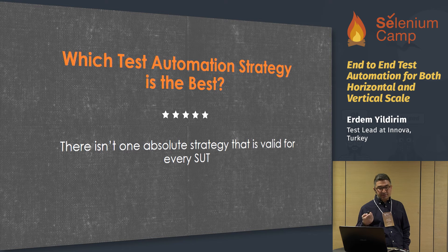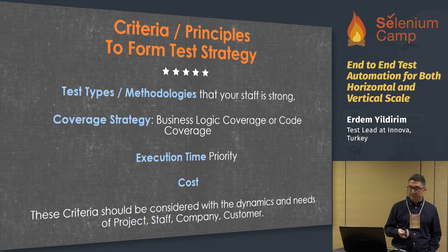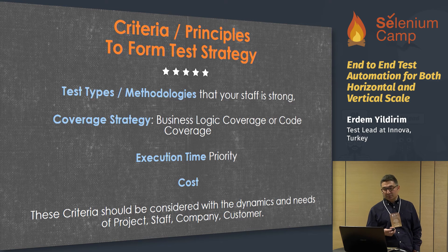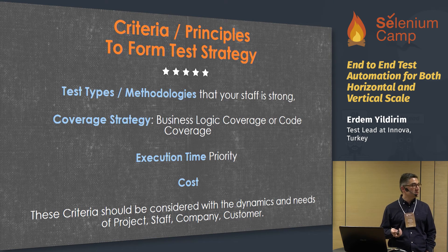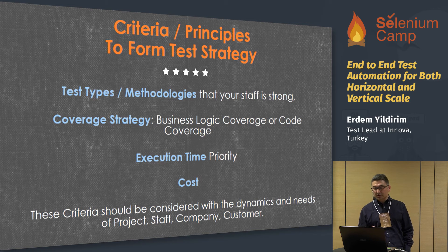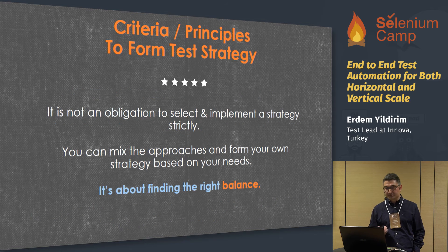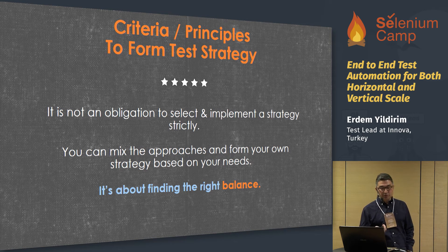Which test automation strategy is the best? There isn't one absolute strategy valid for every SUT. You should select the test type that your staff is strong in, or be confident you can train them. For coverage strategy, choose between business logic coverage or code coverage. For execution time, determine your priorities and limits. For cost, evaluate your human resources situation. It's not an obligation to select one strategy strictly — you can mix approaches and form your own strategy based on your needs. It's about finding the right balance.